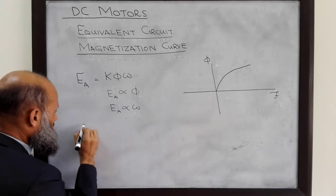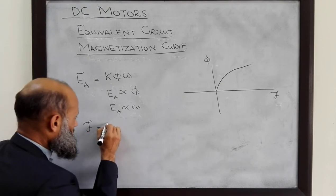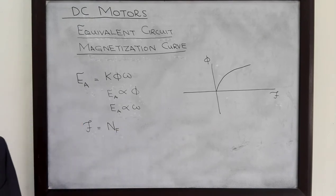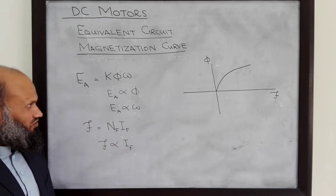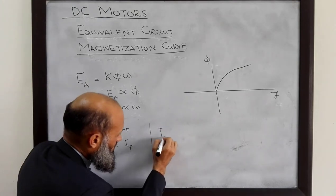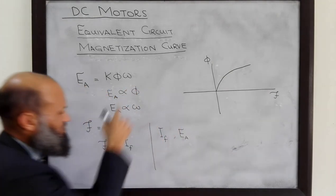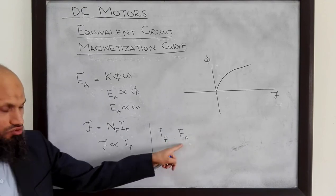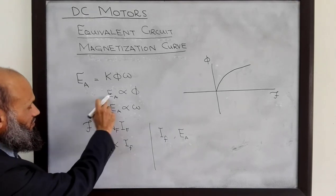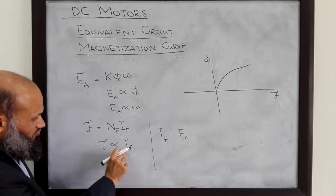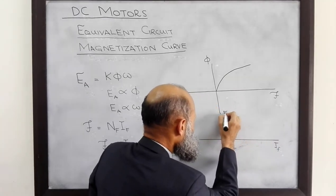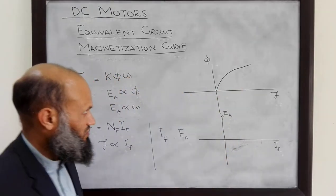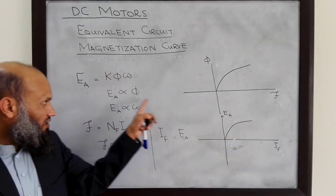Furthermore, the MMF in case of electromagnets is equal to the number of turns on the field winding multiplied by the field current. So, MMF is proportional to the field current. Hence, for DC motors, it is more convenient to have a graph between the field current and the generated voltage for a given speed. Since EA is proportional to flux and MMF is proportional to field current, the relationship between field current and generated voltage is also given by a curve similar in shape to the magnetization curve. And of course, this curve is for a specific speed.